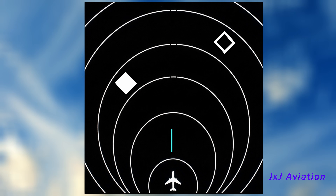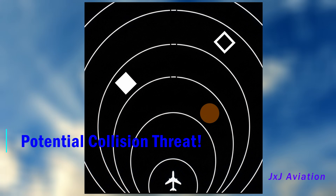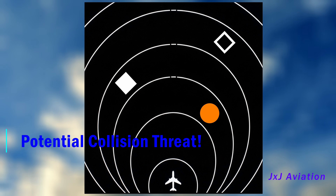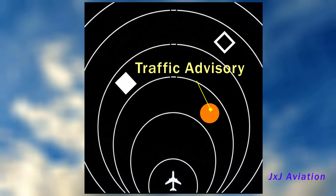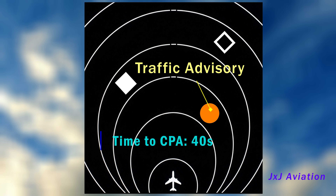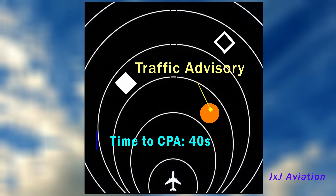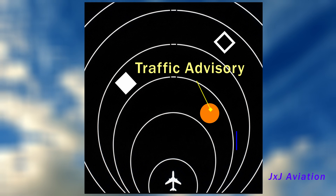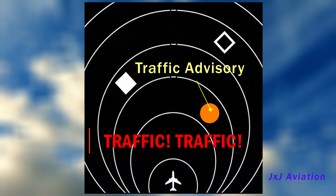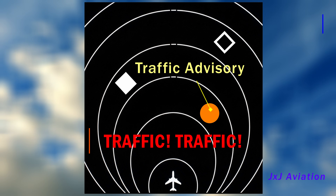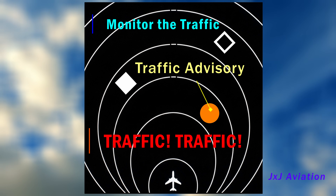If the system detects a potential collision threat, the indication is an amber circle. This is called a Traffic Advisory. The time to collision, or time to closest point of approach, is approximately 40 seconds. The system also triggers an aural alert: "Traffic! Traffic!" Now the pilots have to monitor the traffic, but no corrective action is to be taken.